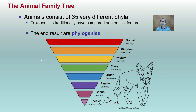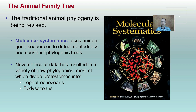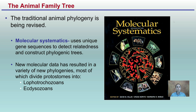Within this animal family tree, the traditional animal phylogeny is being revised. Molecular systematics uses unique gene sequences to detect relatedness and construct phylogenetic trees. We're getting away from the phenotypic features and getting more into the genotypic features. As a result, we've created new divisions and new ways to divide different things, really looking at the genetics of those.